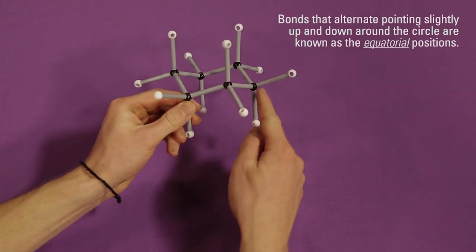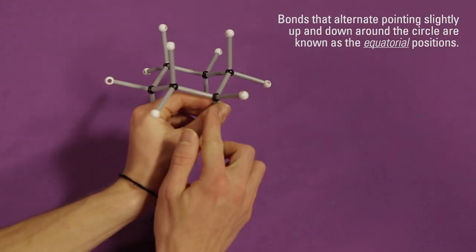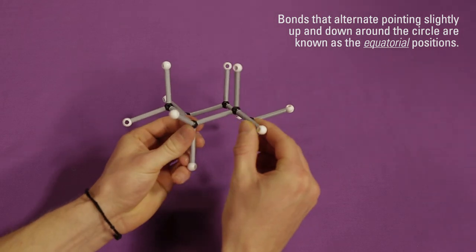The bonds that alternate pointing slightly up and down, around the circle, are known as the equatorial positions.